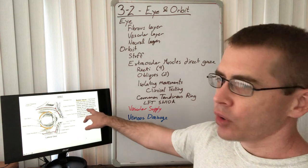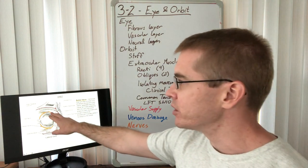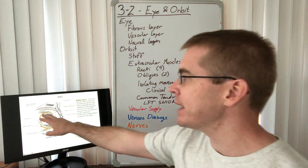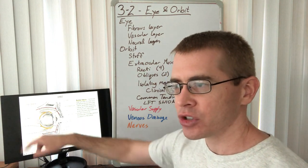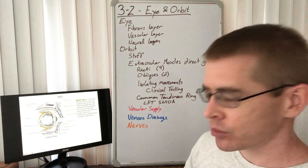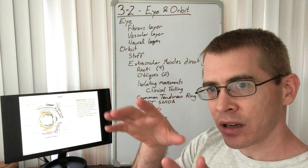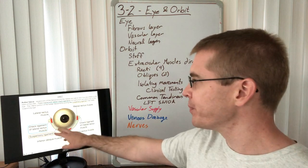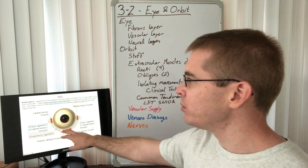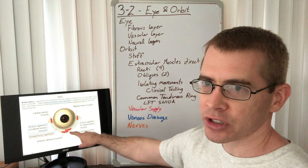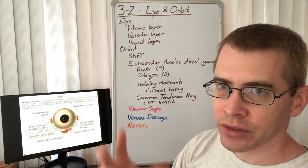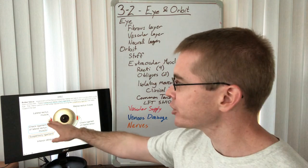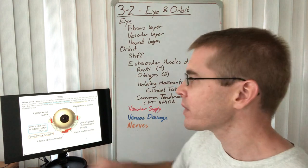There is additional fascia called the bulbar fascia, which surrounds the eye, cushions it, and holds it in place within the orbit. The extraocular muscles must pierce the bulbar fascia in order to attach to the eye and direct its gaze. The bulbar fascia also forms a suspensory component sometimes called the suspensory ligament.